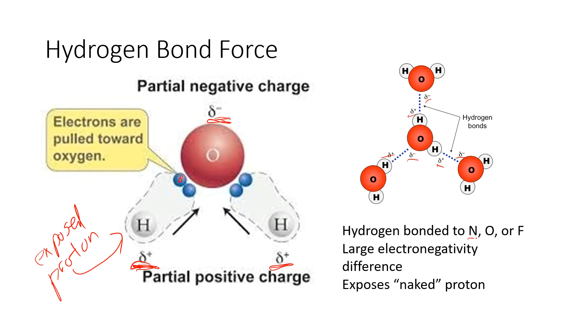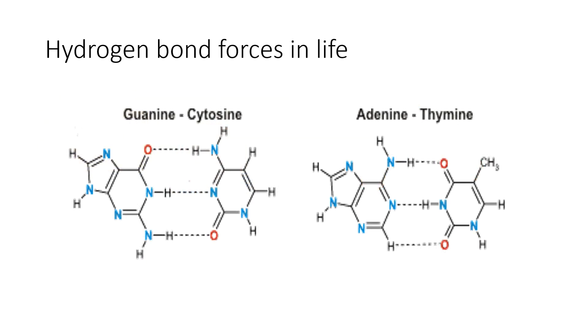So hydrogen bonding happens when hydrogen is with an N, O, or F. I'm still not sure why chlorine didn't work, but it didn't. Large electronegativity difference. And what rules the day here is that it's basically an exposed proton. So this is what we discussed happens with why guanine only bonds to cytosine in your DNA, and adenine only bonds with thymine.